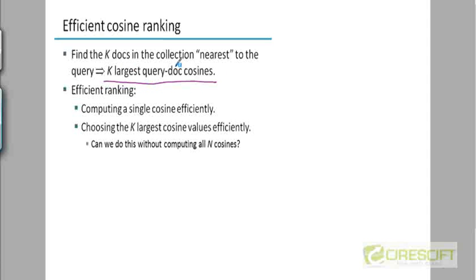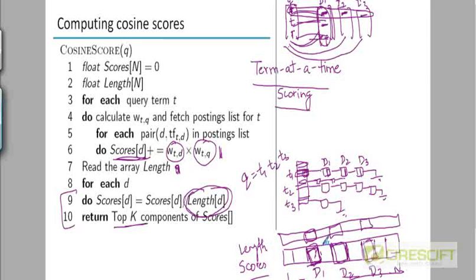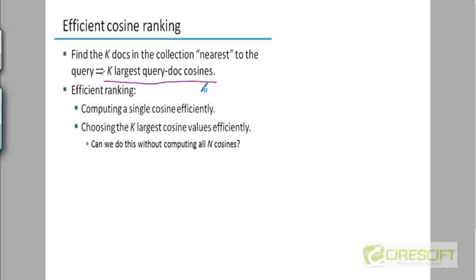We want to do this very efficiently. One trivial way to think about it is you just sort this entire list of scores and then choose the top k. That's actually a pretty inefficient way. We'll look at a more efficient way to choose the top k scores.